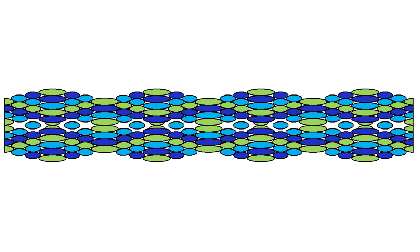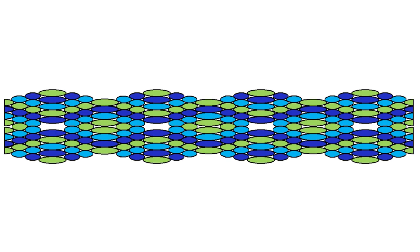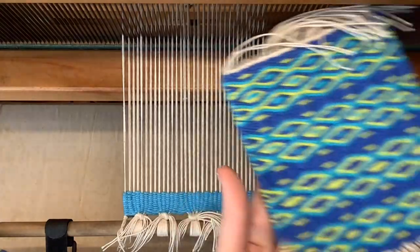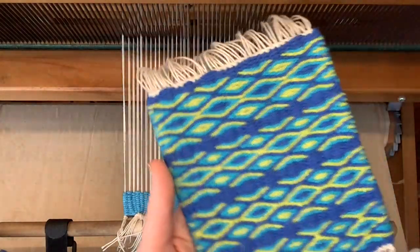So today I'm going to weave a sampler with all four turn types to see how they work and what they look like. Stick around to the end and I'll compare them all side by side and flip the sampler over to explain what's happening on the back.